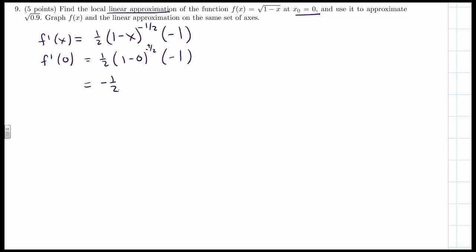We need a point, so we'll find F(0). F(0) equals the square root of one minus zero, which is one.